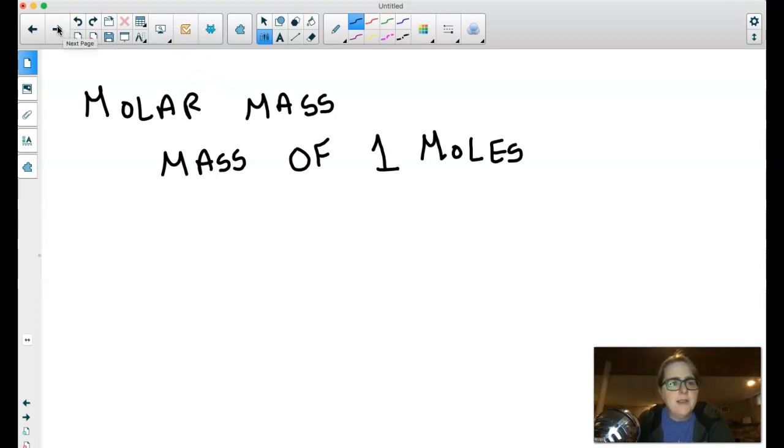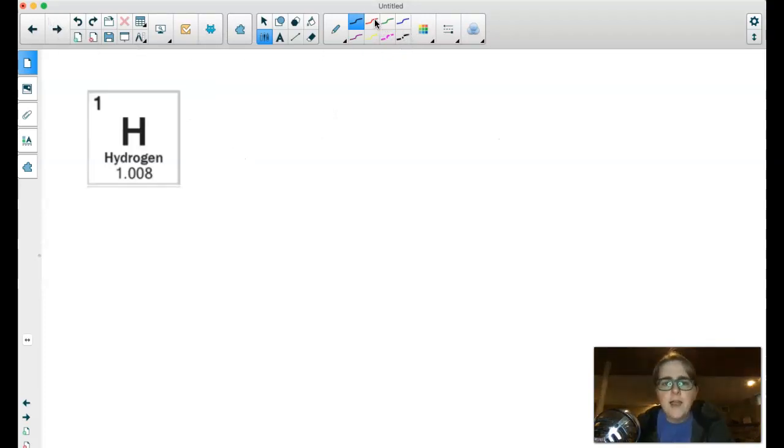Now we're going to be making a lot of use of the periodic table with this topic. And so I want to show you where to find that on the periodic table. So I've got the hydrogen box from the periodic table I like to use on here. Now different periodic tables are laid out a little bit differently. And so you may have used one for ChemEssentials A that had the molar mass in a slightly different spot.